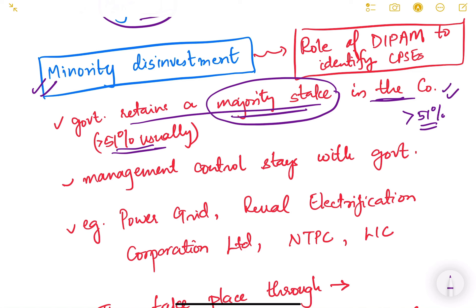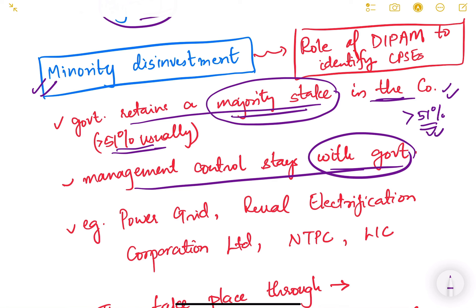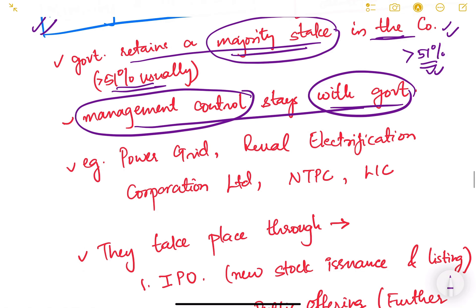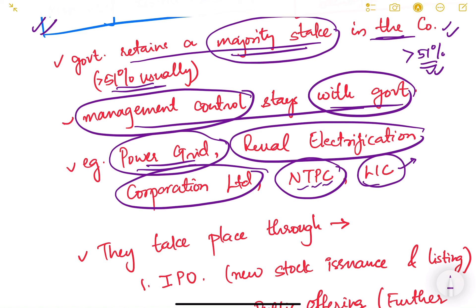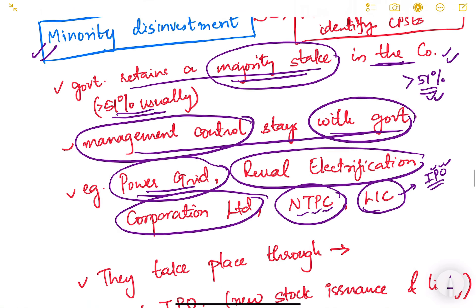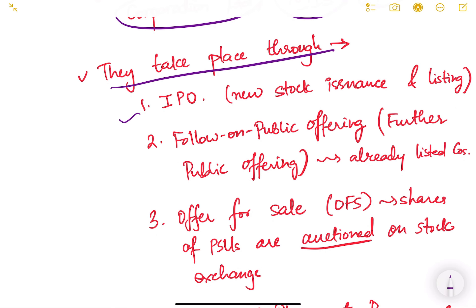In minority disinvestment, the government retains a majority stake in the company — usually more than 51%. So if it holds more than 51%, the government is still the owner but wants to raise some money, so the remaining shares are sold to provide liquidity. Management control stays with the government. Examples of minority disinvestment include Power Grid, Rural Electrification Corporation, NTPC, and recently LIC, where the government launched an IPO (Initial Public Offering) while retaining majority control.